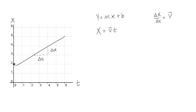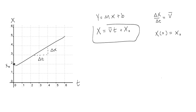Our initial position at the beginning is x-naught — that's x when time is zero, or x sub zero. This equation is really useful, but you can only use it if there is constant velocity.